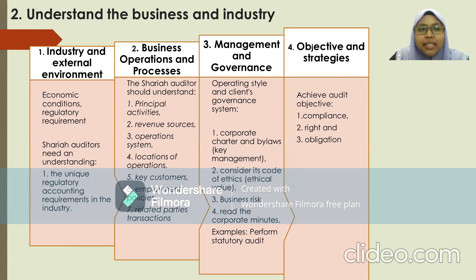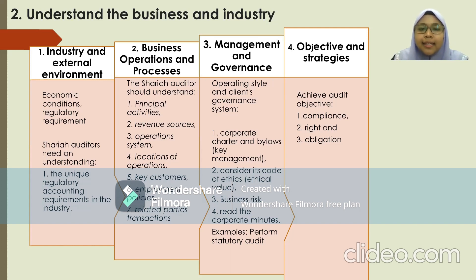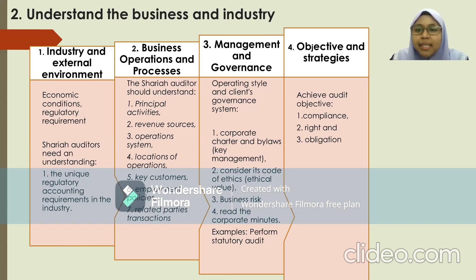The second process is to understand the business and industry. The Sharia auditor must follow four procedures: first, regarding the industry and external environment, they must know the economic conditions and regulatory requirements for their client's business — for example, the unique regulatory accounting requirements in a particular Islamic bank. Second, on business operations and processes, they should understand the principal activities, revenue sources, and other key aspects. Third, on management and governance, they must understand the operating style and governance system, such as reviewing the corporate charter to identify key management. Lastly, they should understand the objectives and strategies to define their audit scope for achieving compliance, rights, and obligations.